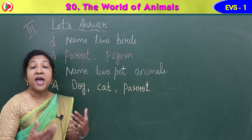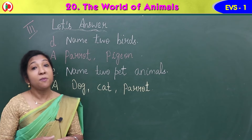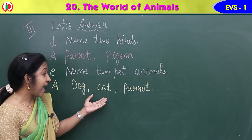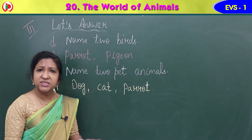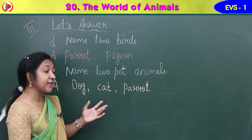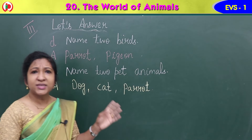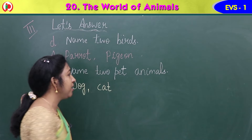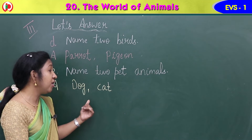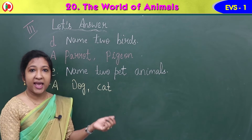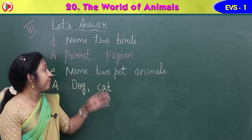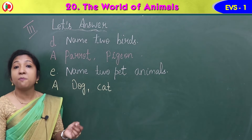Question E, the last question: name two pet animals. You like pet animals and you learned about them. Answer: dog, D-O-G, and cat. Dog is a pet animal; cat is also a pet animal. Any two is enough. So name two pet animals — answer: dog and cat.